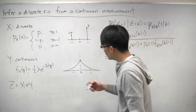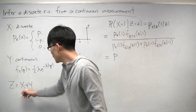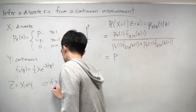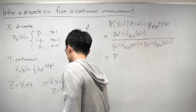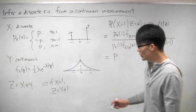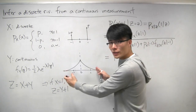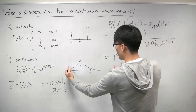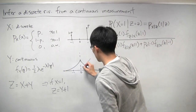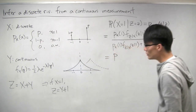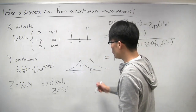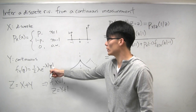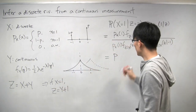If x equals 1, then z is just y plus 1. You can imagine taking the distribution of y and adding 1 to it, which amounts to shifting it over to the right by 1 in the diagram. Algebraically, you just change the argument in the absolute value from y to z minus 1, which amounts to shifting it over to the right by 1.